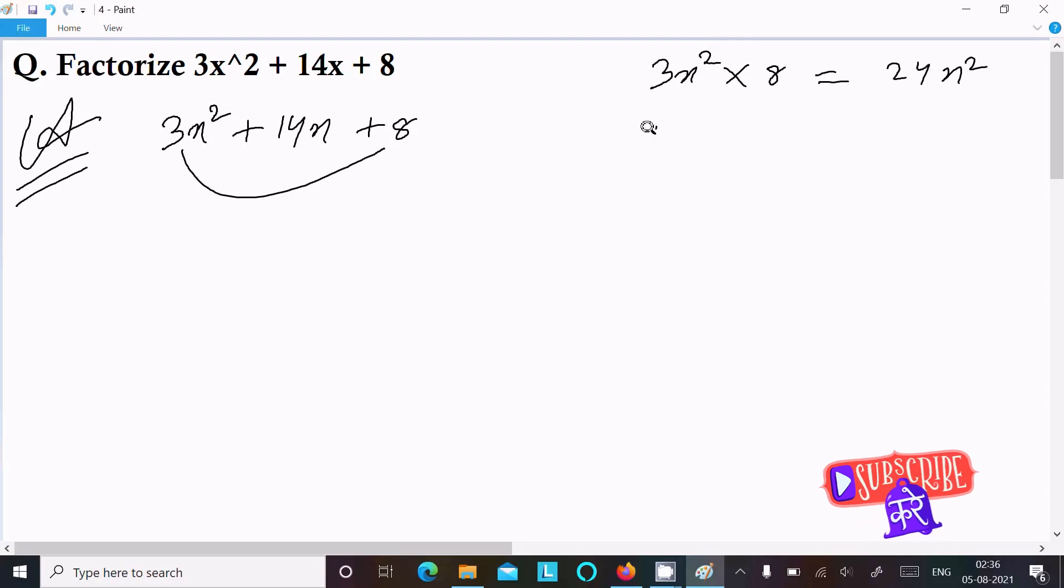Now take the middle part 14x. So 14x we can write as 10x plus 4x, so it's equal to 14x. But when I multiply 10x into 4x, it comes to 40x². So these two are not the same, it's not equal, so we cannot accept, we cannot take 10x plus 4x.